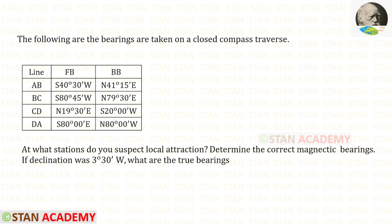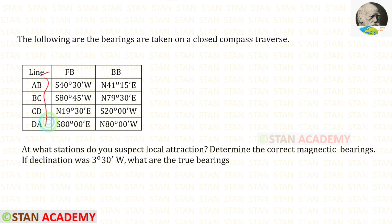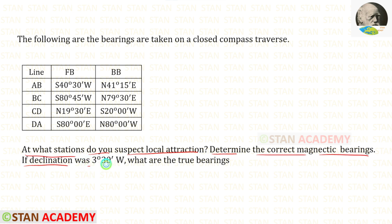Hello everyone. Today we are going to do a problem based on compass surveying. The following bearings are taken on a closed compass traverse. Lines are given, with fore bearings and back bearings provided. At what stations do you suspect local attraction? Determine the correct magnetic bearings. If declination was 3 degrees 30 minutes west, what are the true bearings?